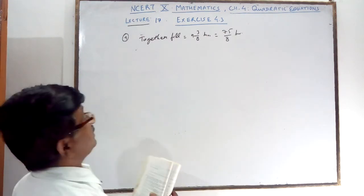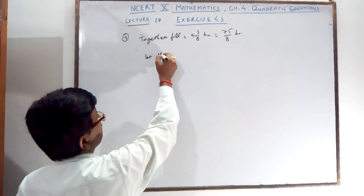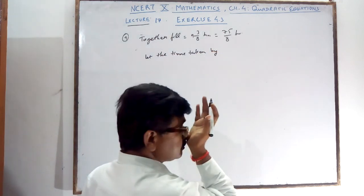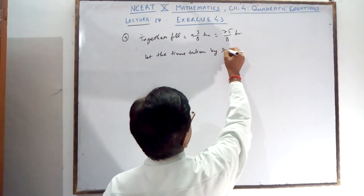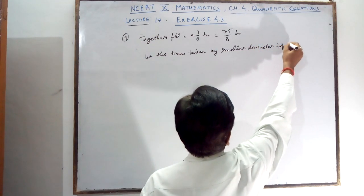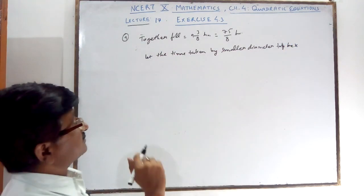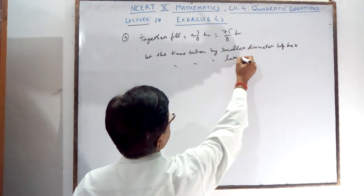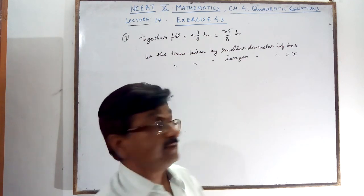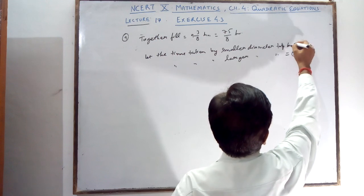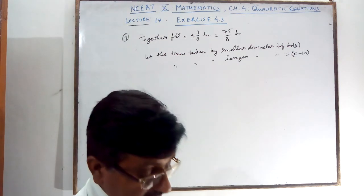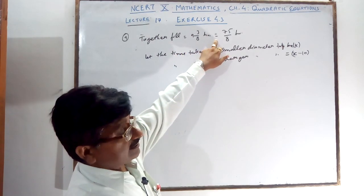Let the time taken by the smaller diameter tap be x hours. So the time taken by the larger diameter tap is x minus 10 hours. If both taps are filling the tank together, the full tank is filled in 75 upon 8 hours.